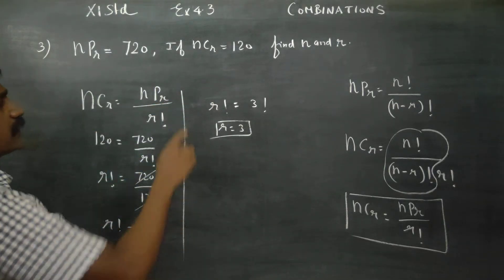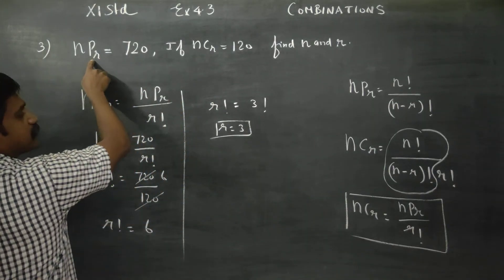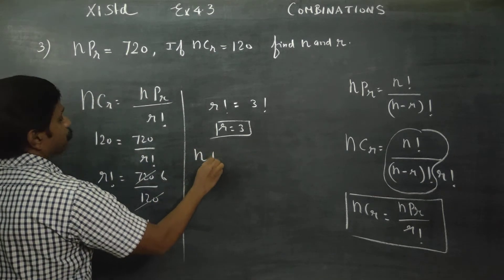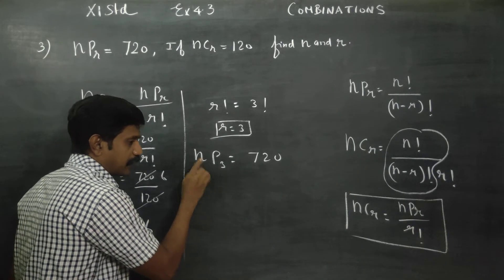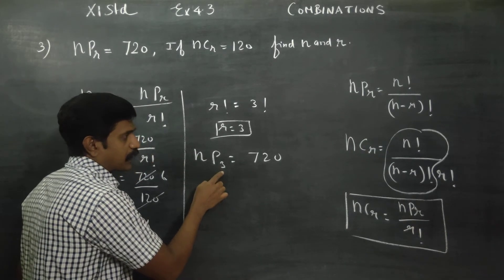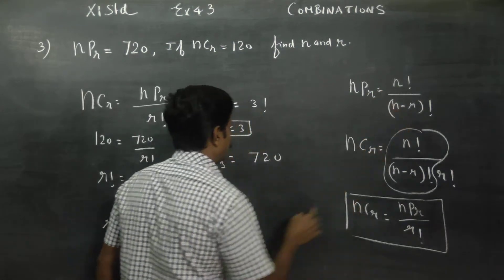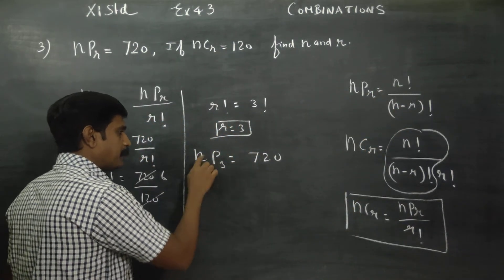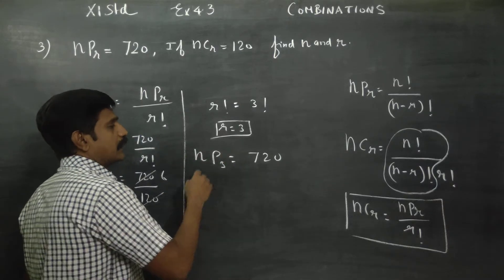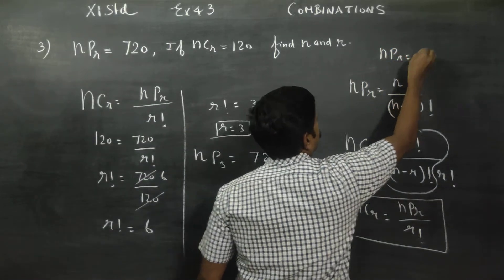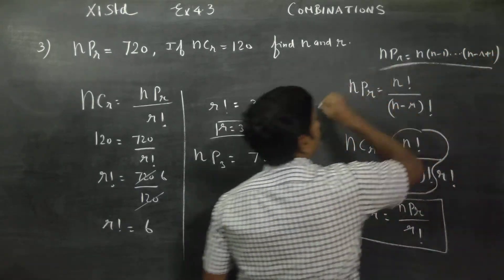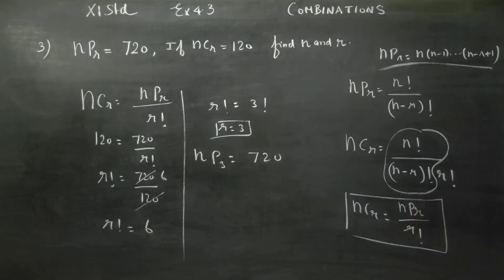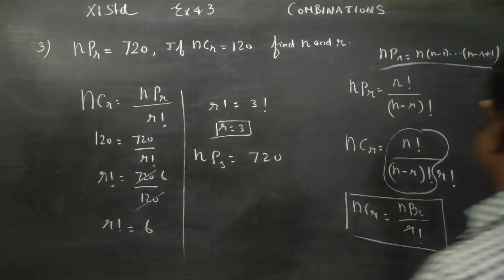Now find the value of N. We know NP3 is equal to 720. Using the NPR formula: NPR equals N into N minus 1 into N minus 2 dot dot dot into N minus R plus 1. For R equals 3, this becomes N into N minus 1 into N minus 2.